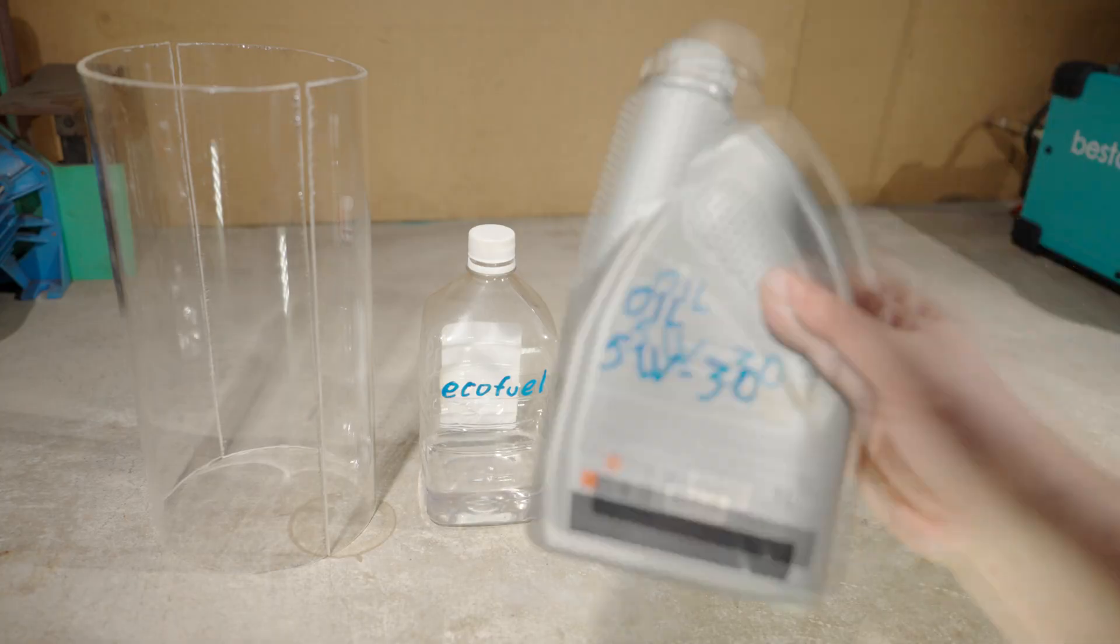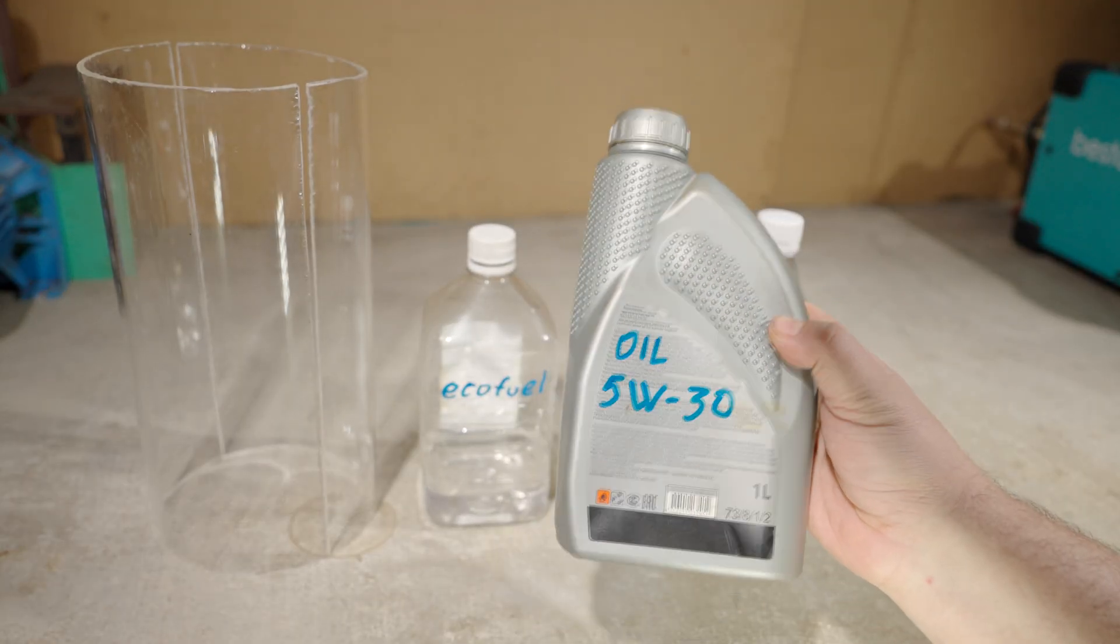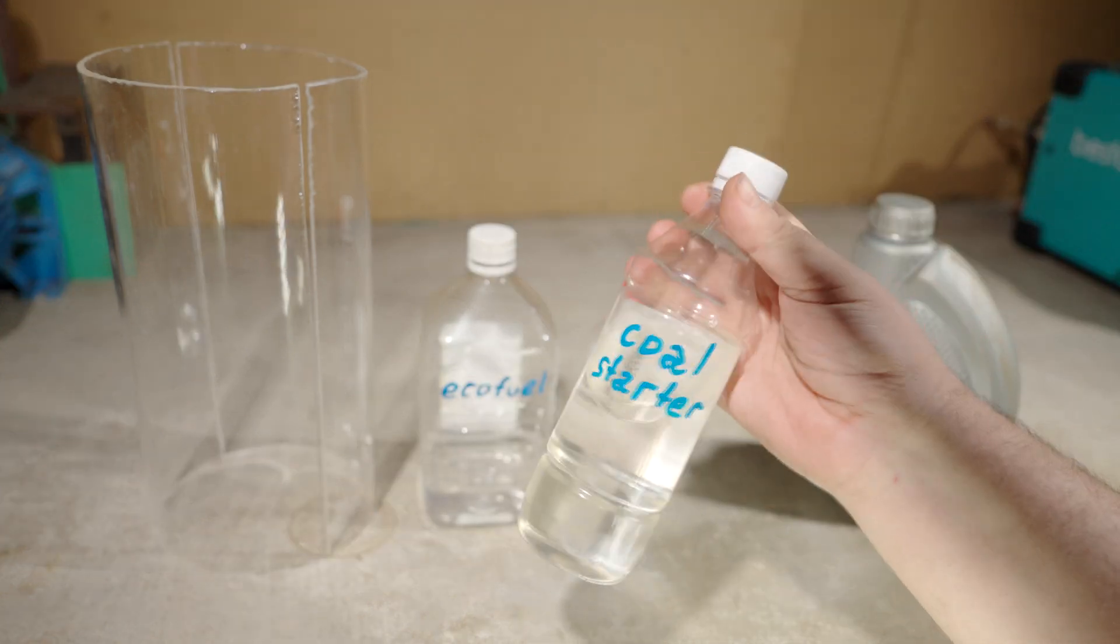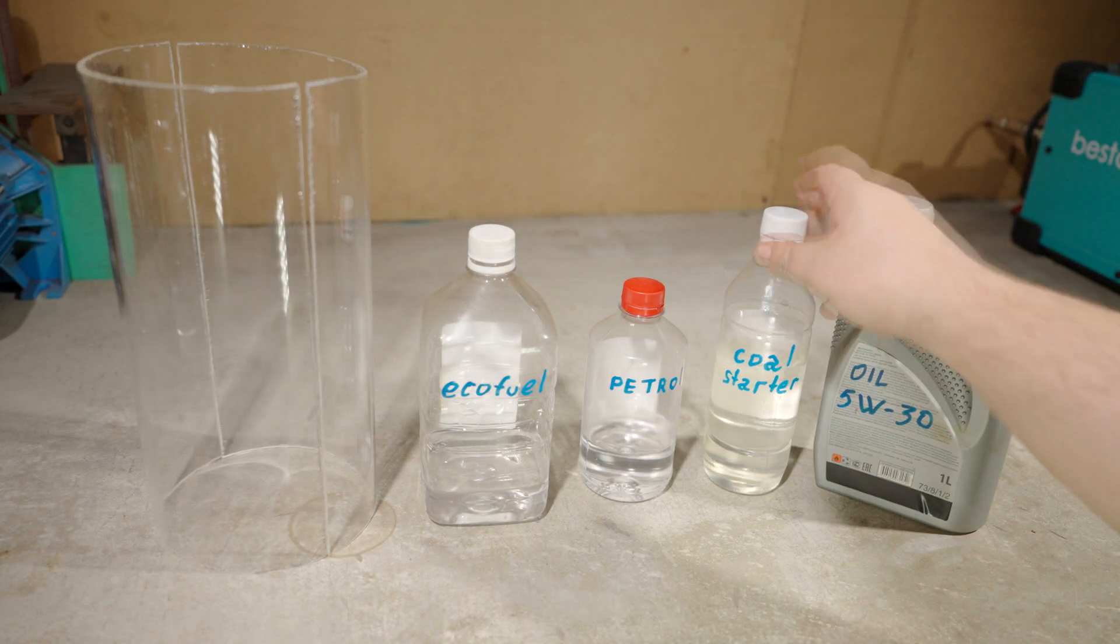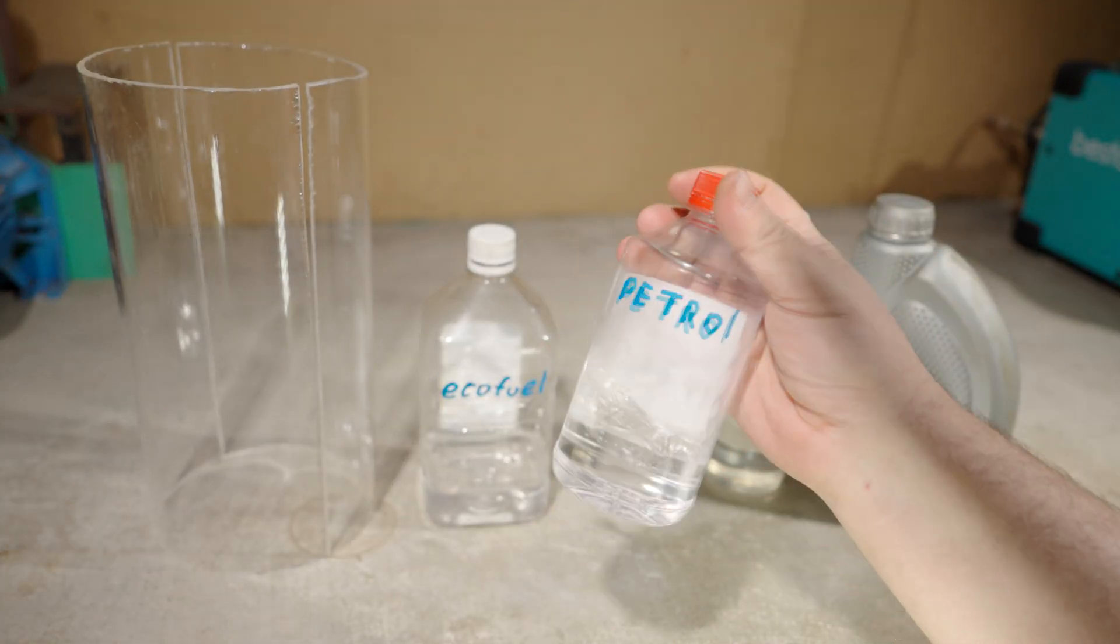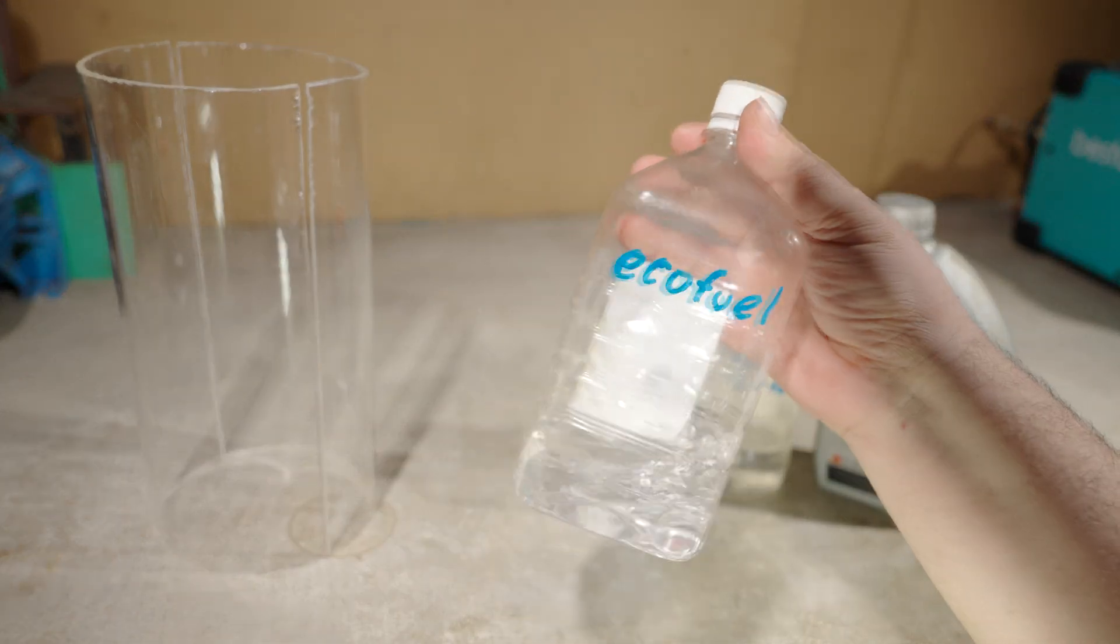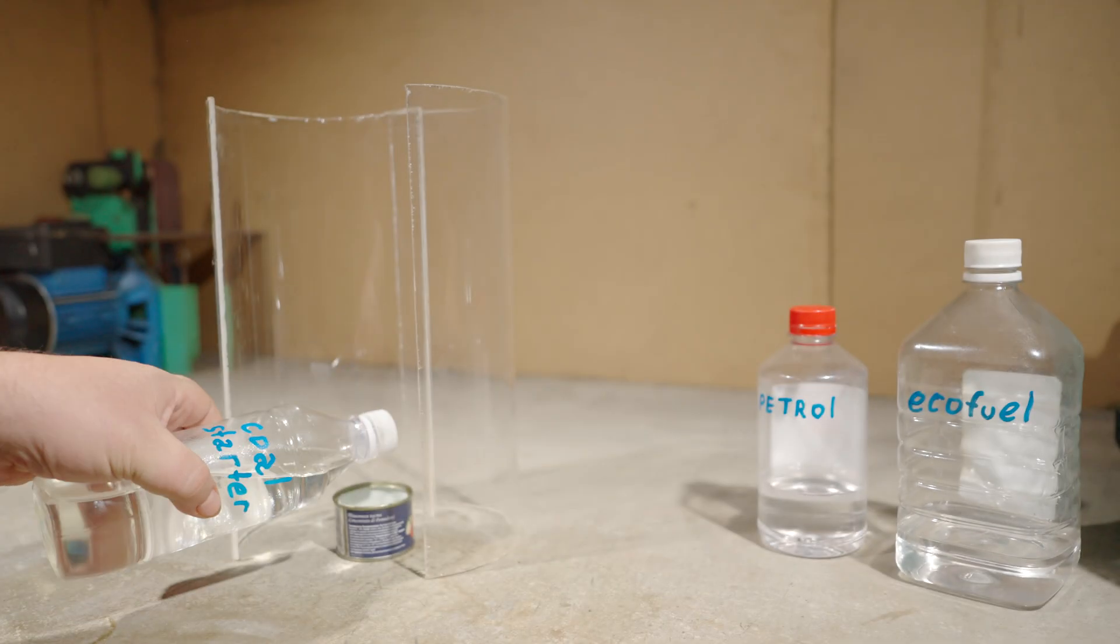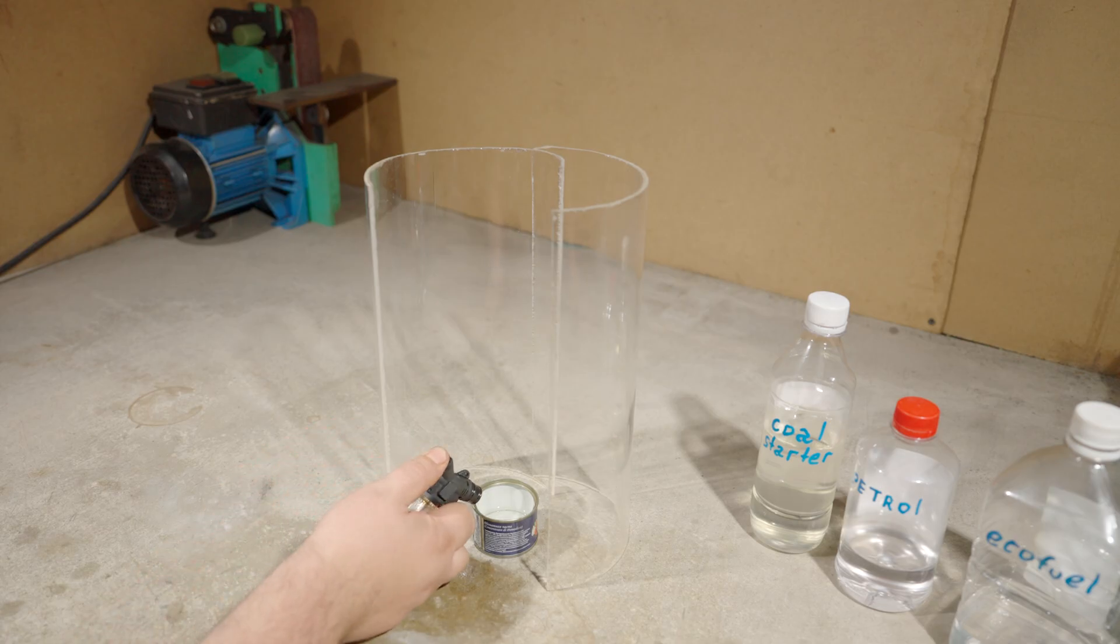Next, I tried charcoal starter fluid for grilling. Not a bad option, but its composition varies depending on the manufacturer. Some people go as far as pouring kerosene straight into a bottle. There's also purified gasoline, like the kind used for refilling Zippo lighters, but that has a slight smell too. Finally, I settled on eco-friendly fuel for bioethanol fireplaces.